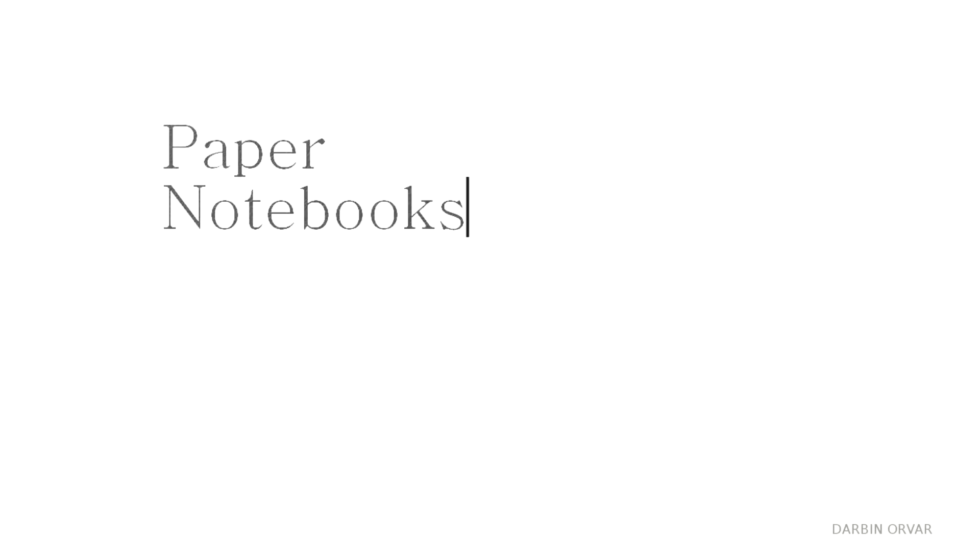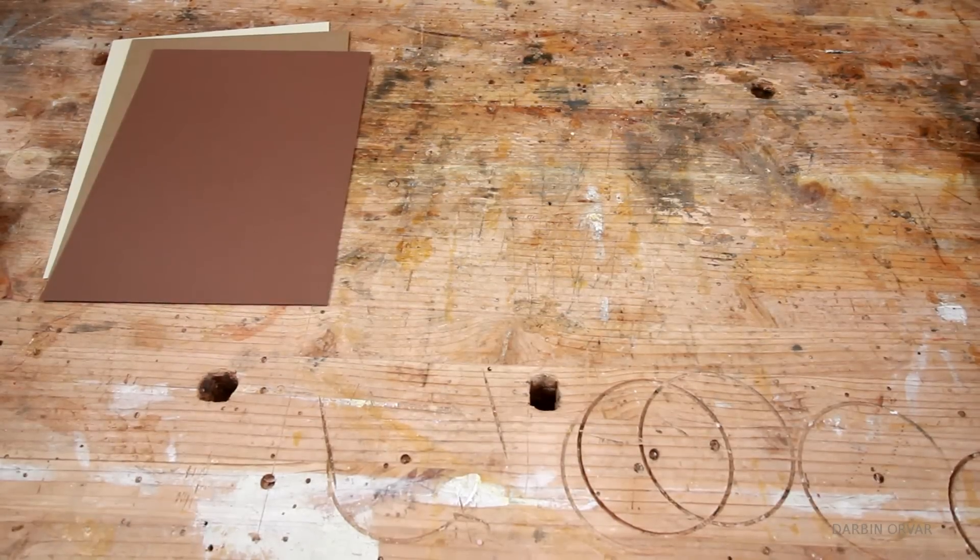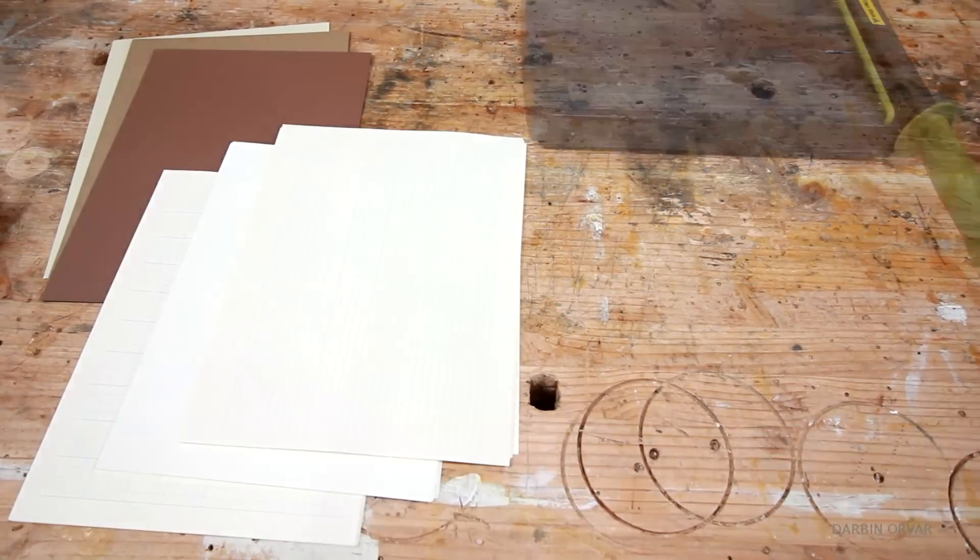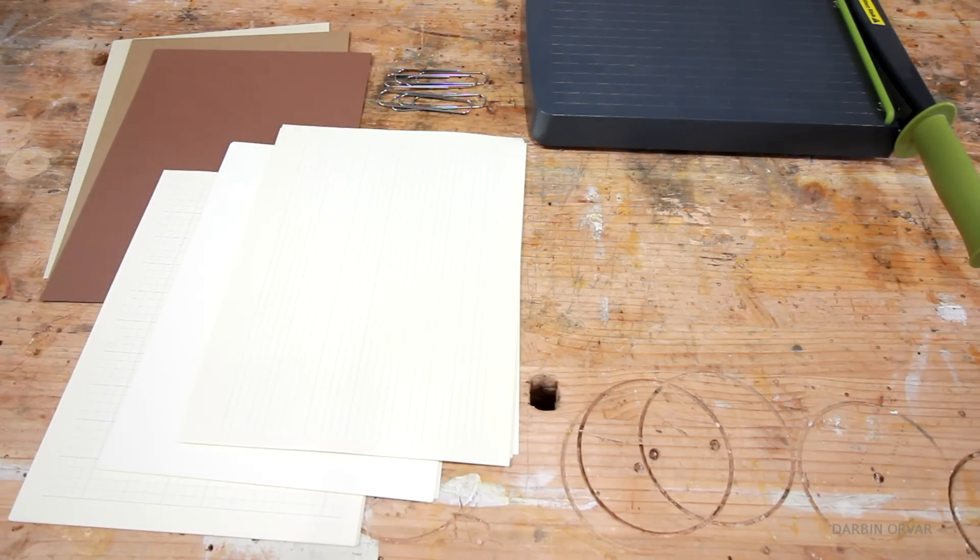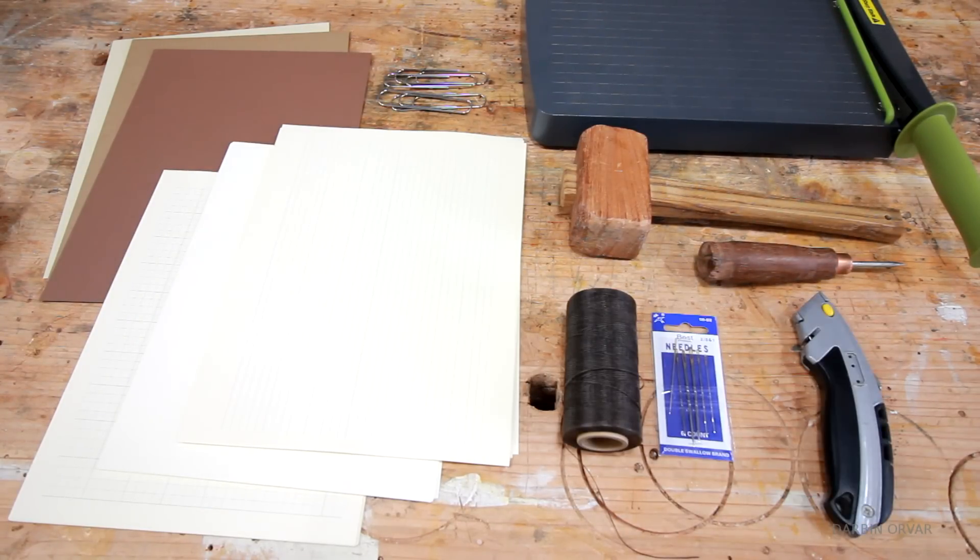Of course you need something to write on, so let's make a couple of notebooks. For that you're going to need hardstock for the covers, paper, a paper cutter, large paper clips, a mallet, an awl, thread, a needle and a razor blade.